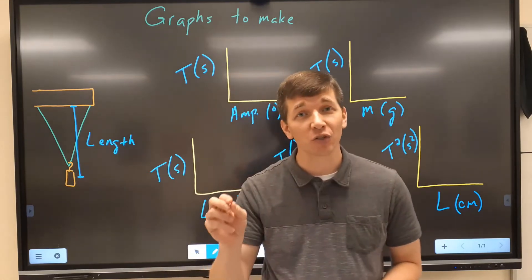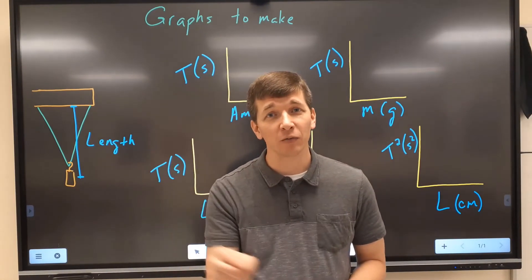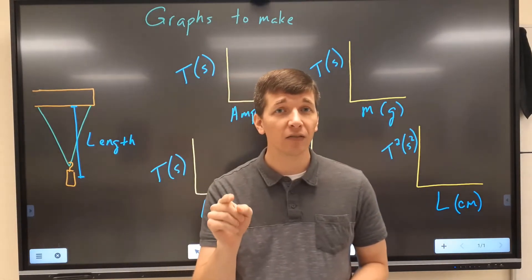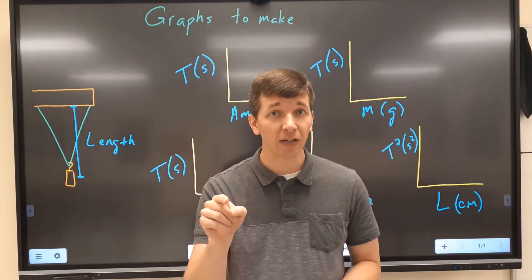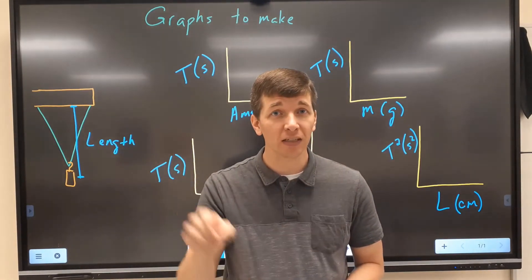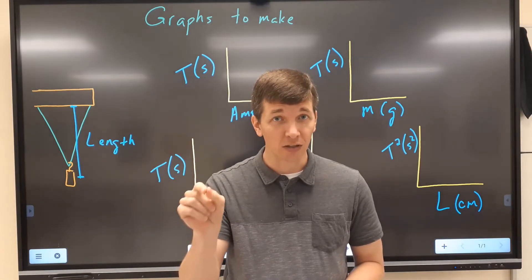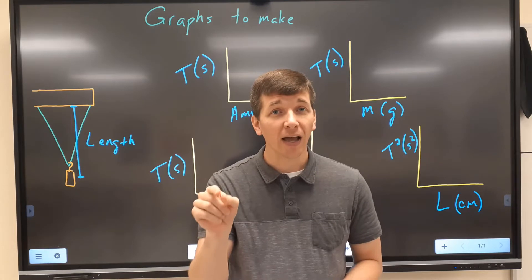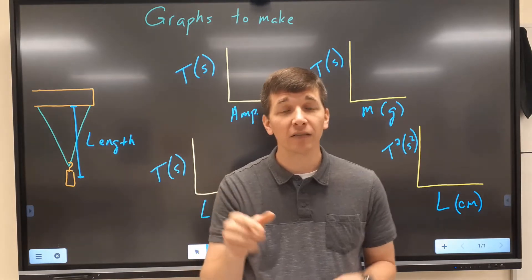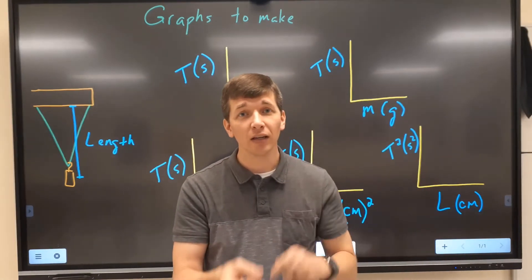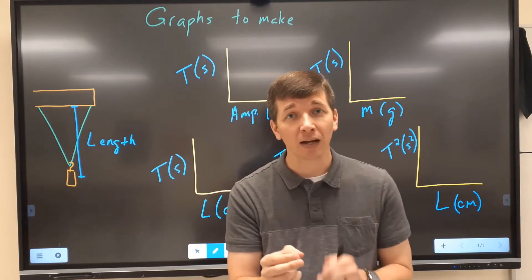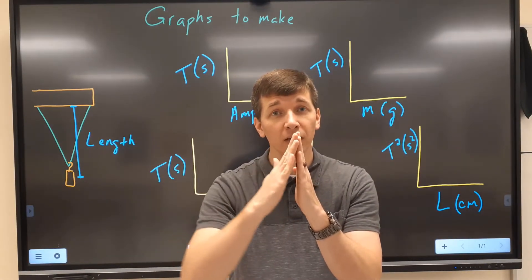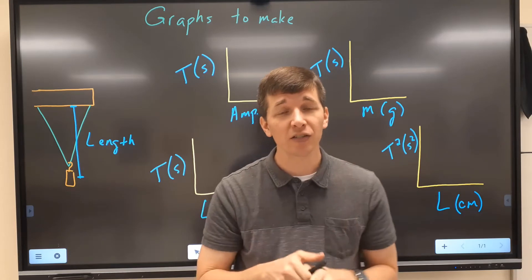A pendulum is a mass on a string swinging back and forth. We want to look at several things: how is the period of that pendulum — the period is the time it takes to make one complete cycle, starting at its starting point and returning to that point — affected by the length of the string, the mass of the pendulum bob, and the amplitude, or how much we pull the pendulum back in the first place?